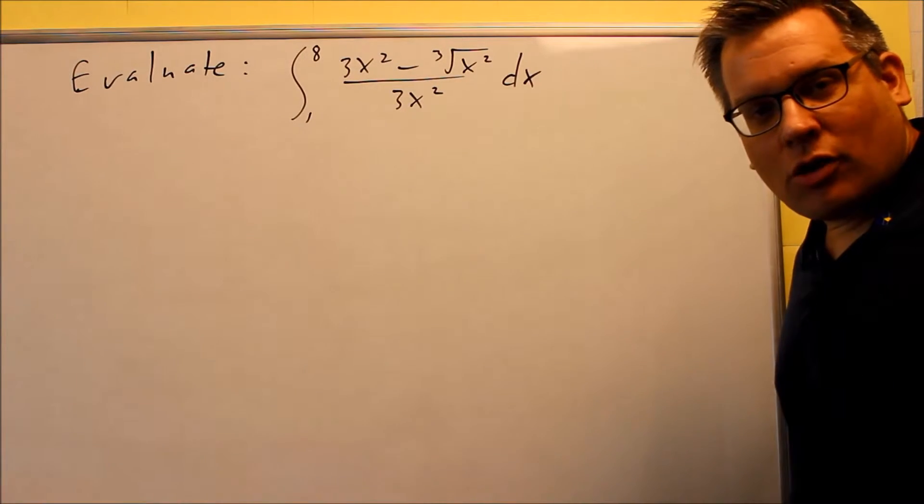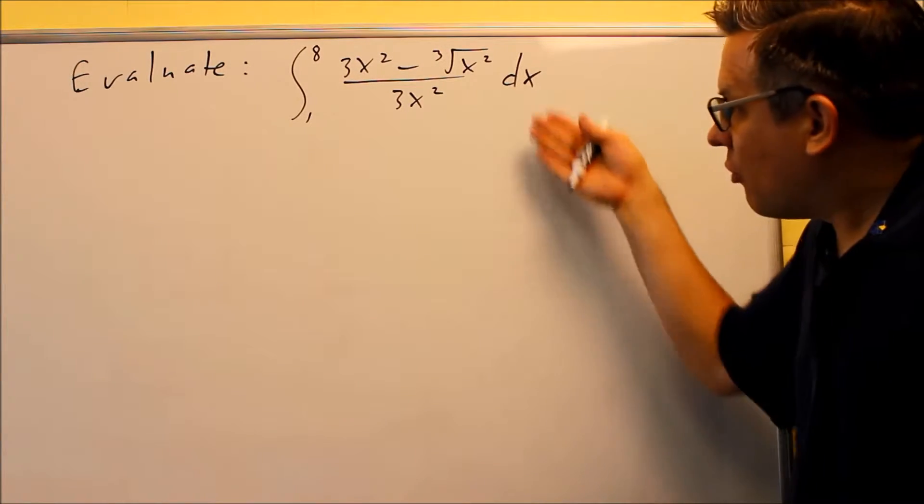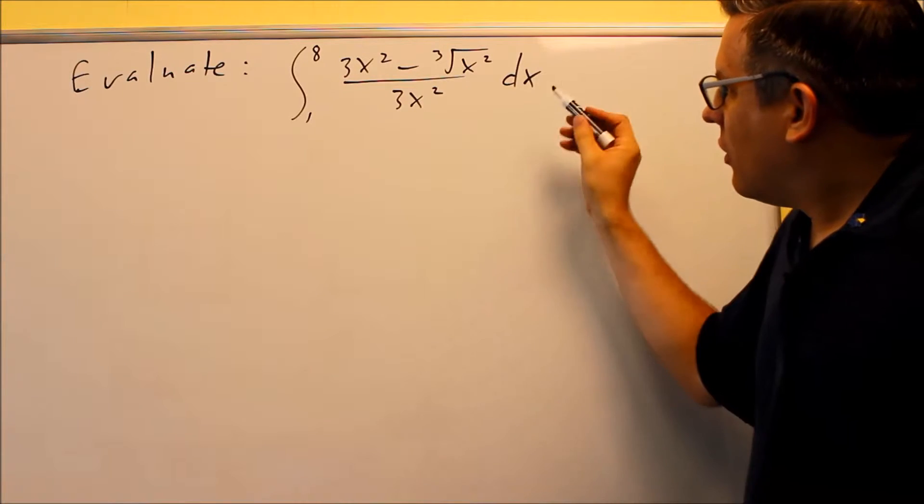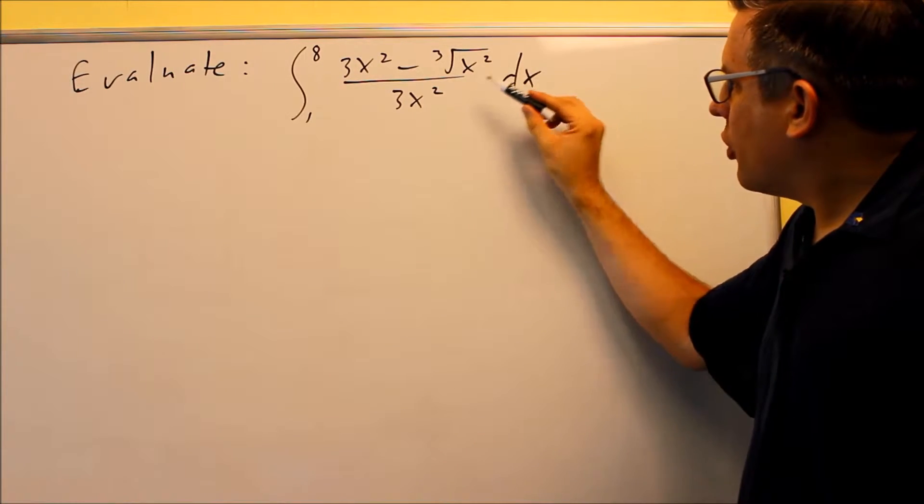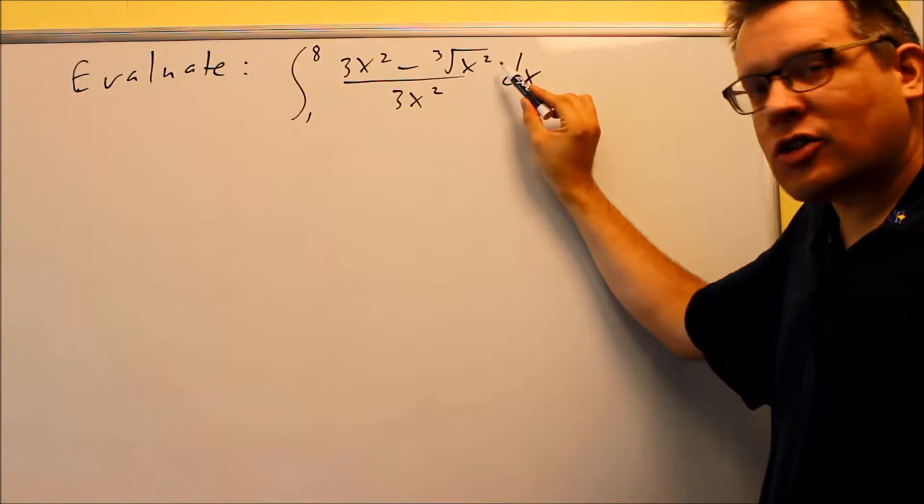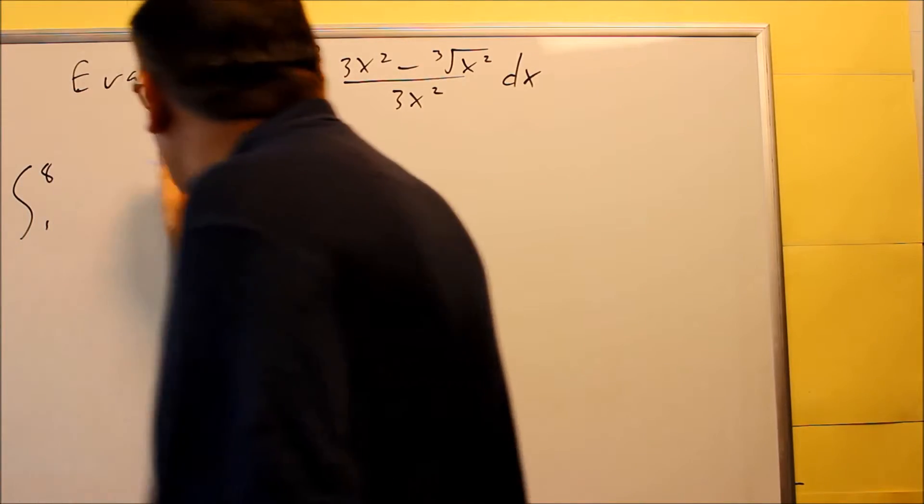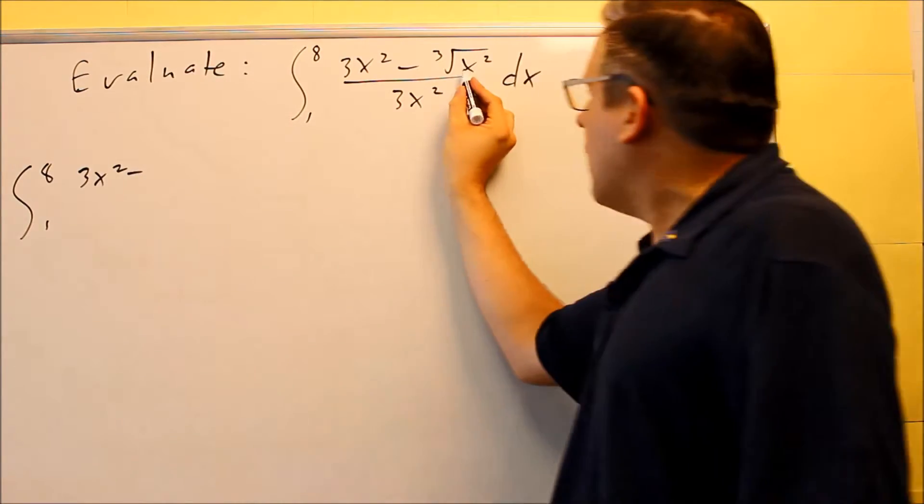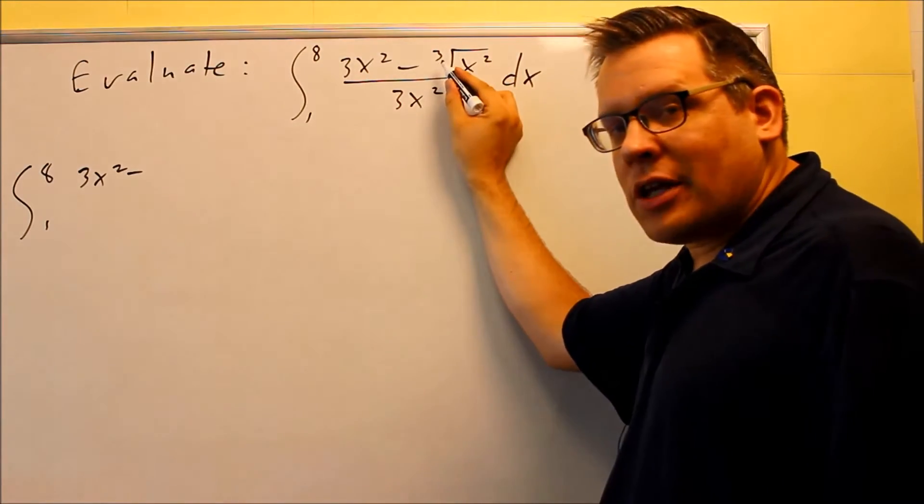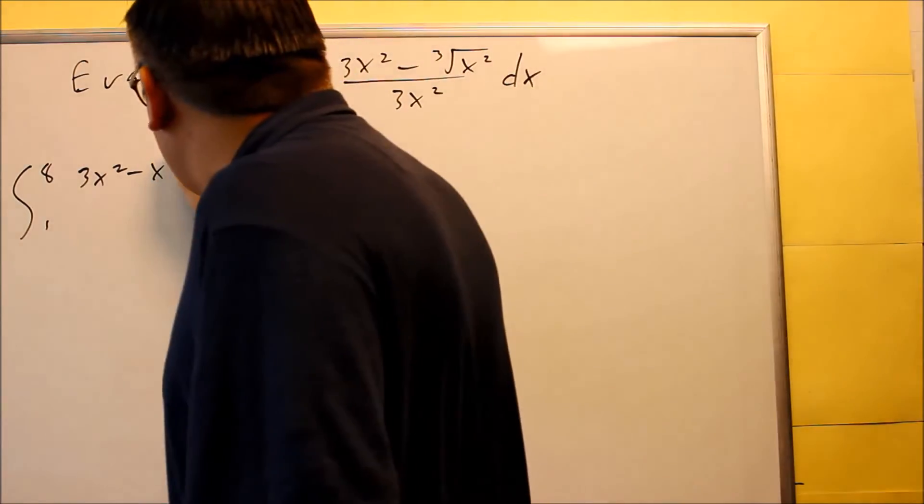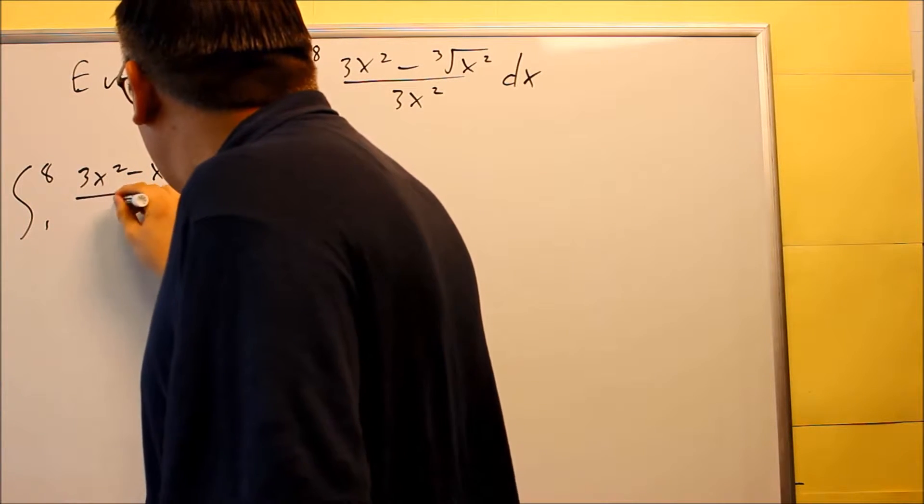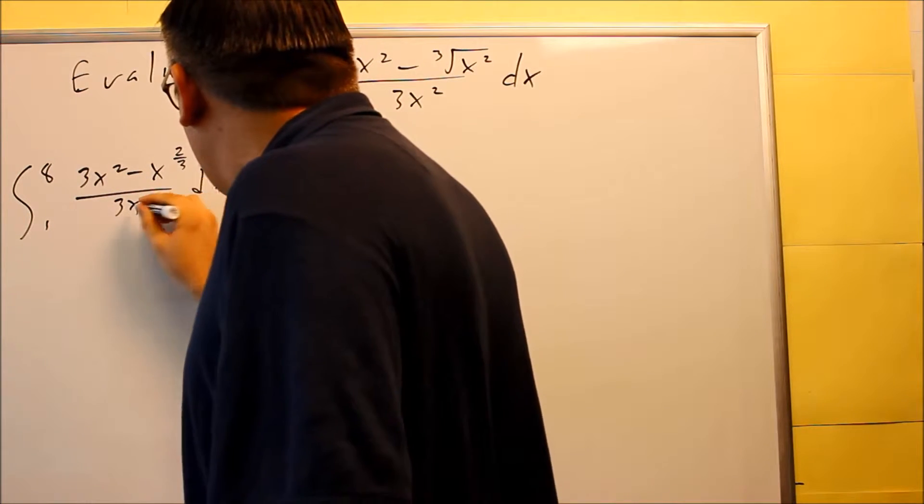Okay, so here's another one where we want to use exponent rules to first simplify it before we take the antiderivative. In this form, what we're going to do is we're going to change this into a rational exponent. We'll do that first, and then we can do some division. So on top, 3x squared minus, this is going to be x, the inside power divided by the outside one, so x to the two-thirds, 3x squared down below with our dx.